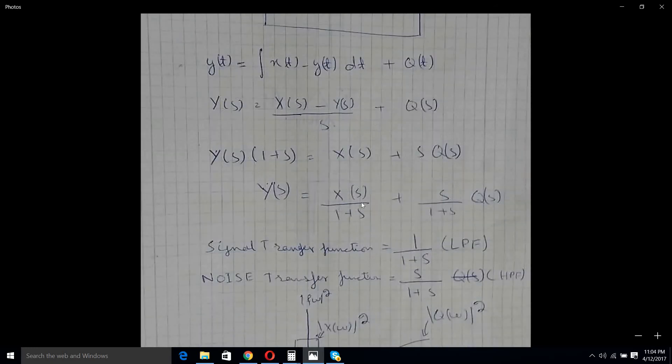One of them is signal transfer function and the second one is noise transfer function. The signal transfer function has a 1 plus s in it, which means that there is a low pass filter over there.